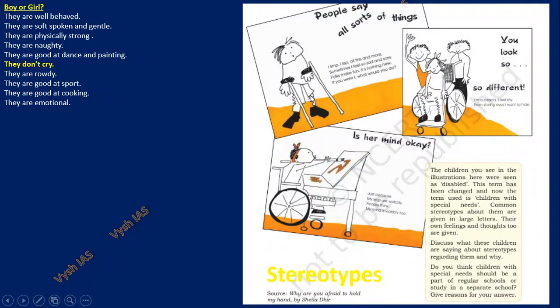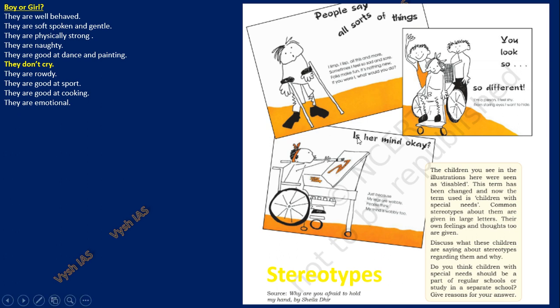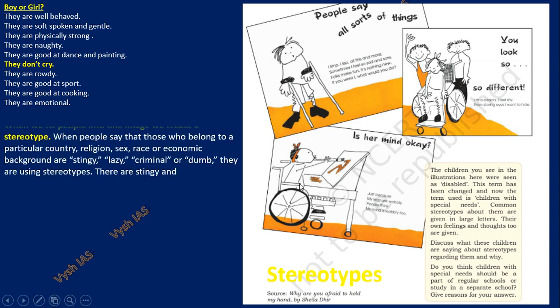These things in NCERT can also be used in essays. Then about people with disabilities — we now call them children with special needs. But when you see someone walking with a stick or in a wheelchair, you immediately think his brain is also weak, his studies are weak, he has no extra hobbies, he's struggling in life. This impression is also a kind of prejudice and stereotyping of a particular category, and it should not be done. When we fix people into one image, we create a stereotype.